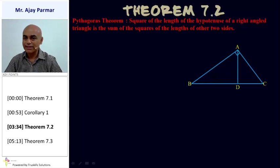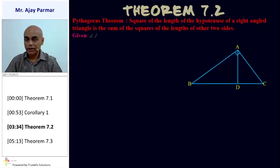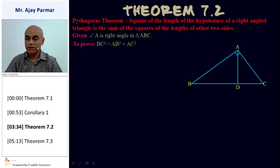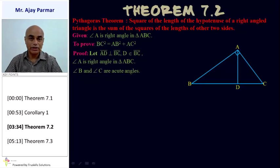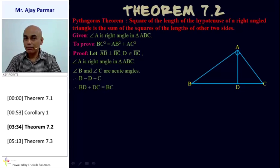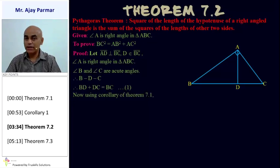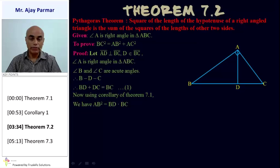In triangle ABC, measure of angle A is a right angle. To prove this theorem we need an altitude, line segment AD. Given: angle A is a right angle in triangle ABC. We need to prove AB² + AC² = BC². We draw altitude AD perpendicular to BC, so D belongs to line segment BC. Since angle A is a right angle, angles B and C are acute angles, giving us B-D-C, and therefore BD + DC = BC. Applying the corollary of Theorem 7.1, AB² = BD × BC and AC² = CD × BC.